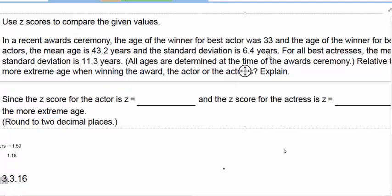For all Best Actors, the mean age is 44.4 and the standard deviation is 5.7. For all Best Actresses, the mean age is 36.4 and the standard deviation is 11.2. Relative to their genders, who had the more extreme age?